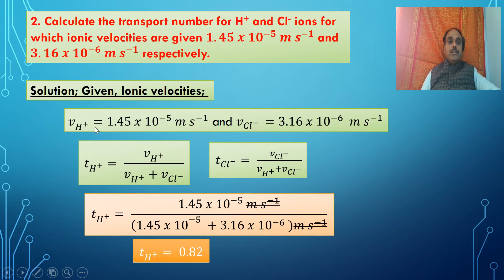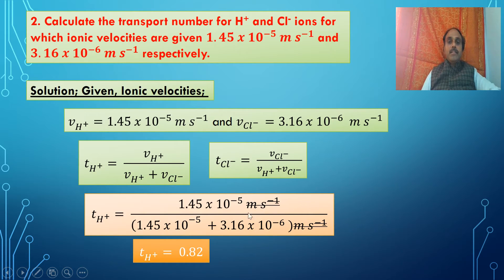Using the velocities of H⁺ and Cl⁻, the transport number of H⁺ equals 1.45 × 10⁻⁵ divided by (1.45 × 10⁻⁵ plus 3.16 × 10⁻⁶) meter per second. The units cancel and the answer is 0.82.